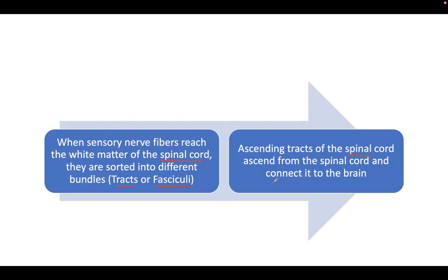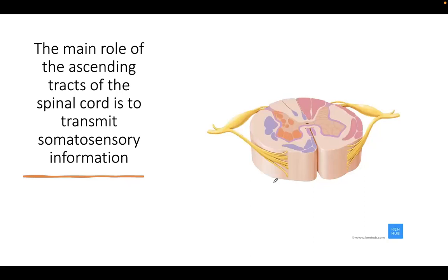This is the opposite of the motor pathways because the motor pathways are descending — corticospinal, corticobulbar — starting from the cortex of the brain until it reaches the spinal cord, the spinal nerves, and the muscles. In the ascending tract, which is sensory, the tracts will ascend from the spinal cord and connect to the brain. The main role of the ascending tracts of the spinal cord is to transmit somatosensory information, starting from the spinal cord going up, connecting to the brain.